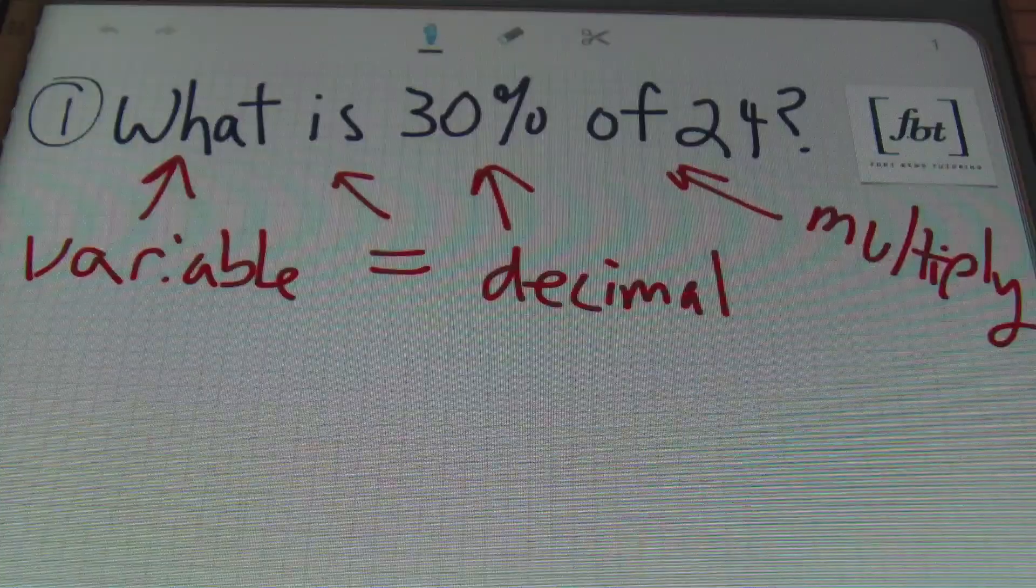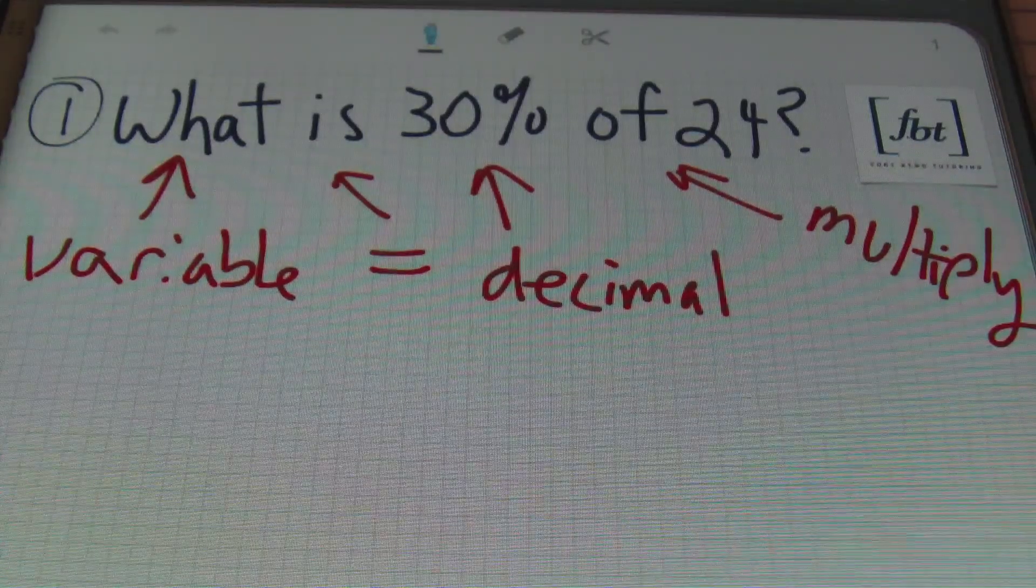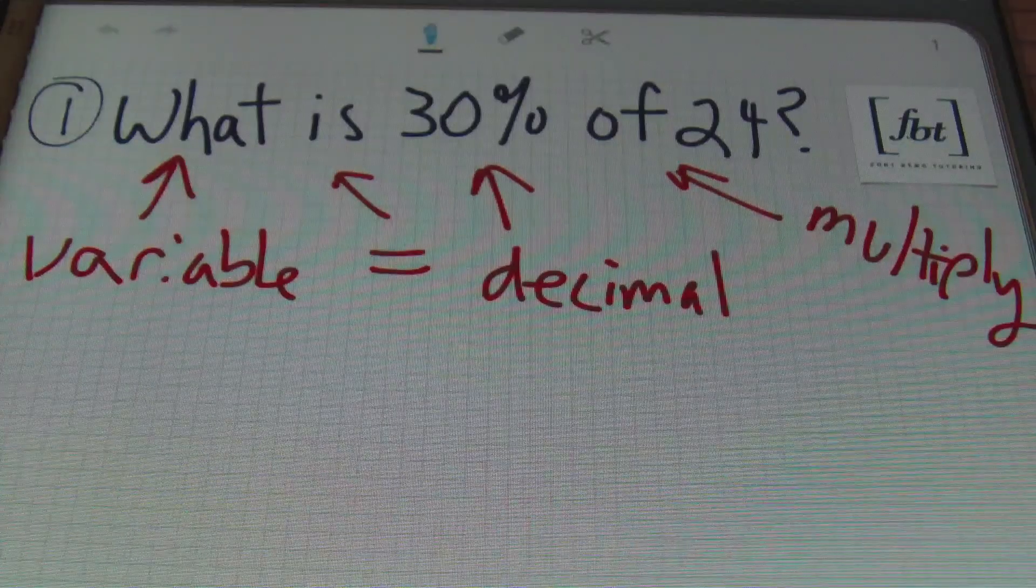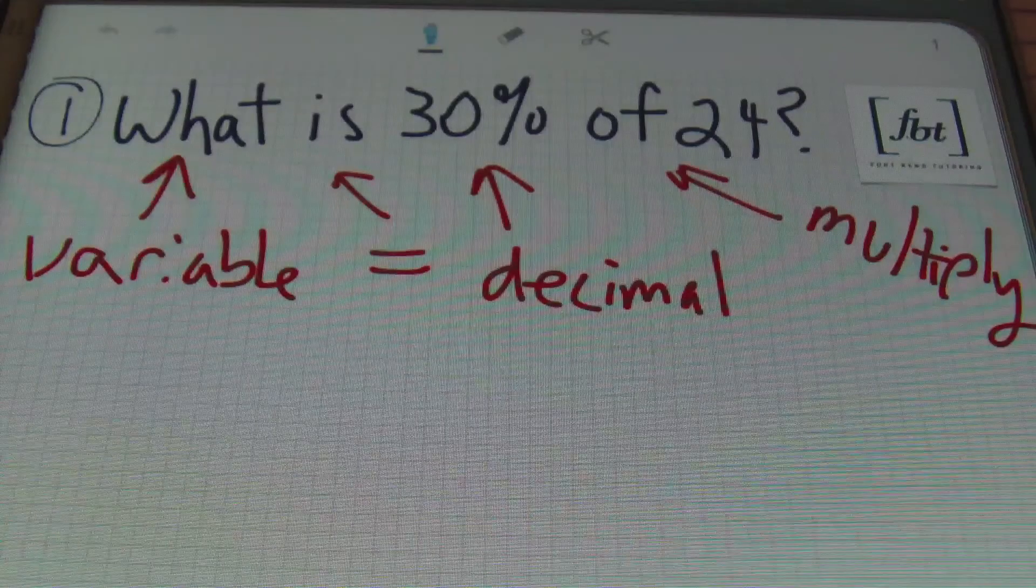The other method is solving by percent proportion. So for every problem that you see, I'm going to be doing it twice - one using the algebraic translation method, and the second time using the percent proportion.